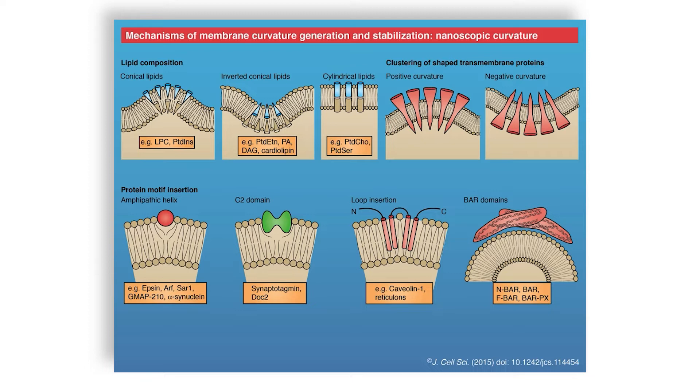In experimental systems and in cells, nanoscopic curvature can be generated by lipid composition or protein motif insertion. You see in the top row the lipid composition that determines the curvature induction by these kind of conical lipids being inserted in a certain specific way, causing either positive or negative curvatures. Cylindrical lipids, on the other hand, will then pin it and create straight line non-curved structures, or clustering of transmembrane proteins with either positive or negative curvature.